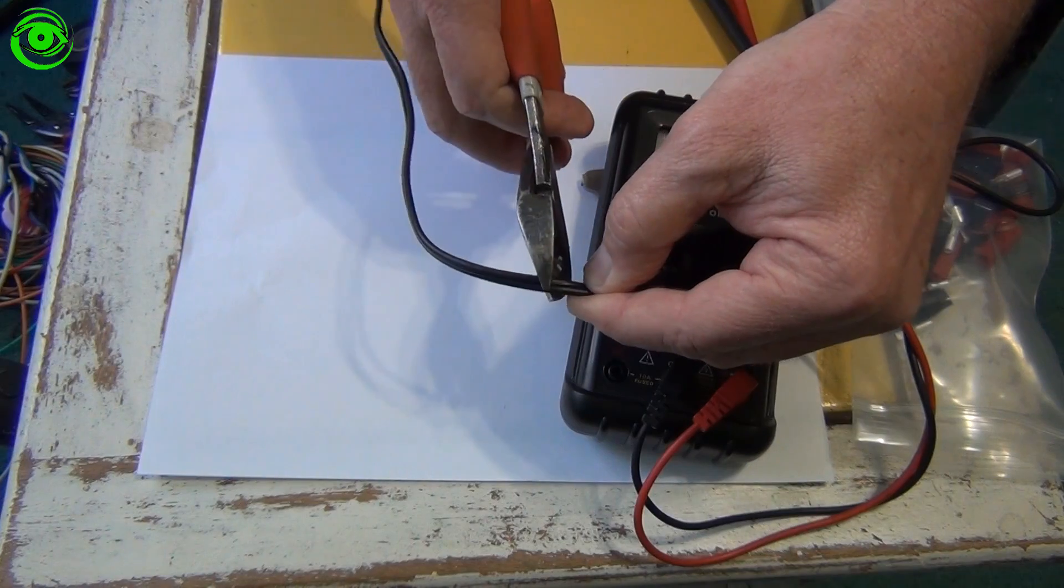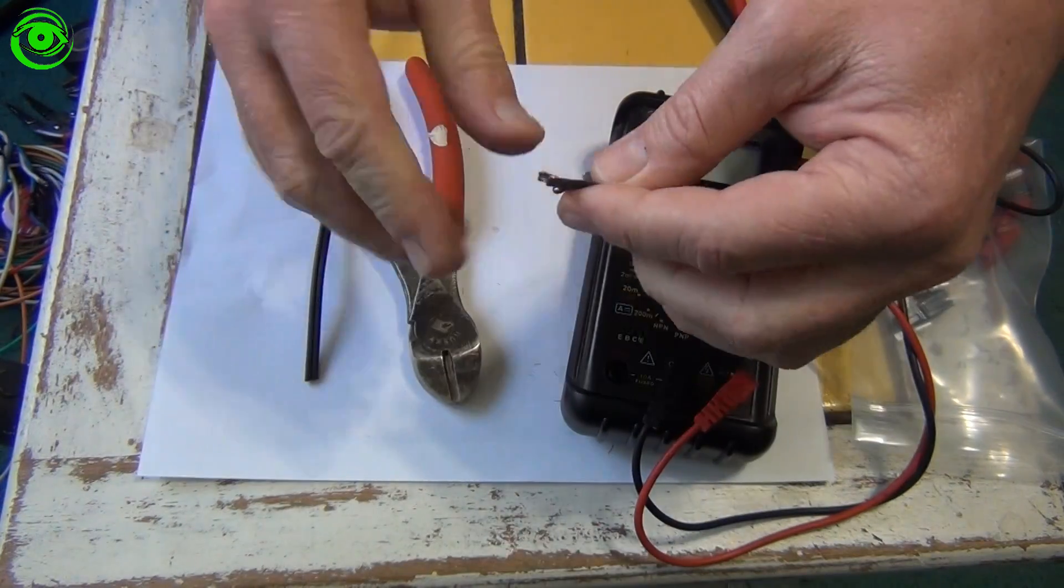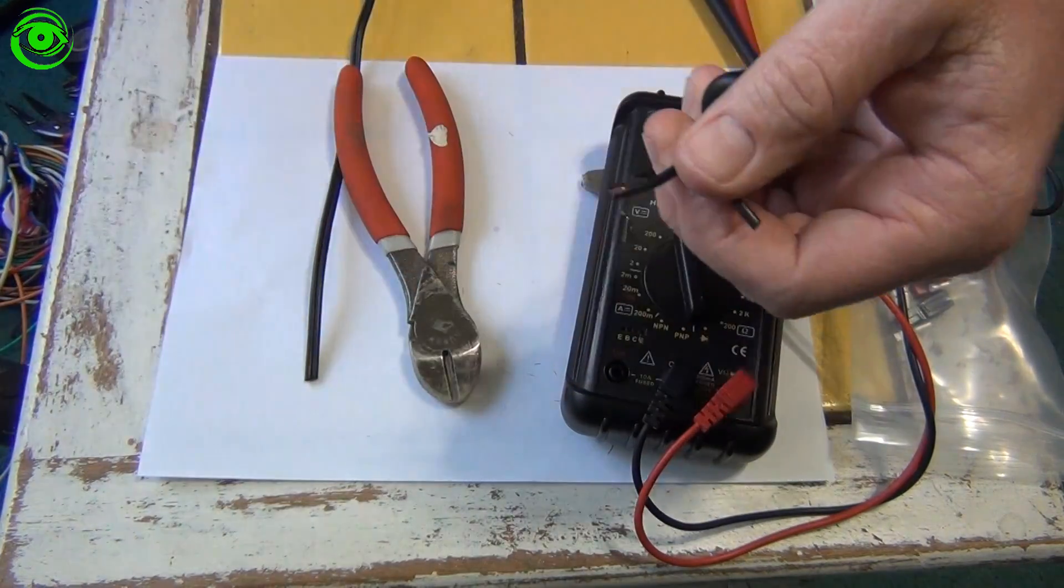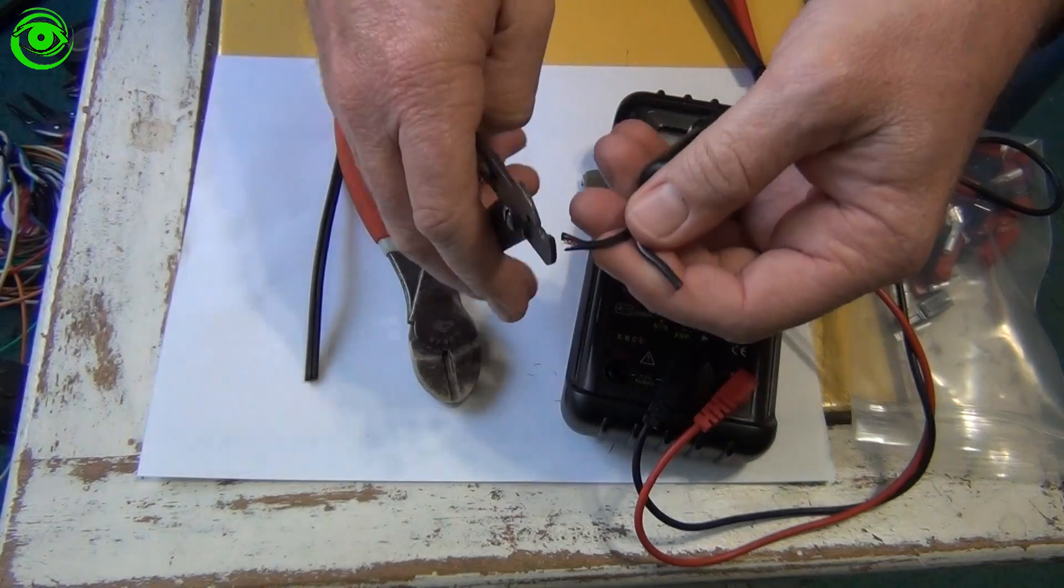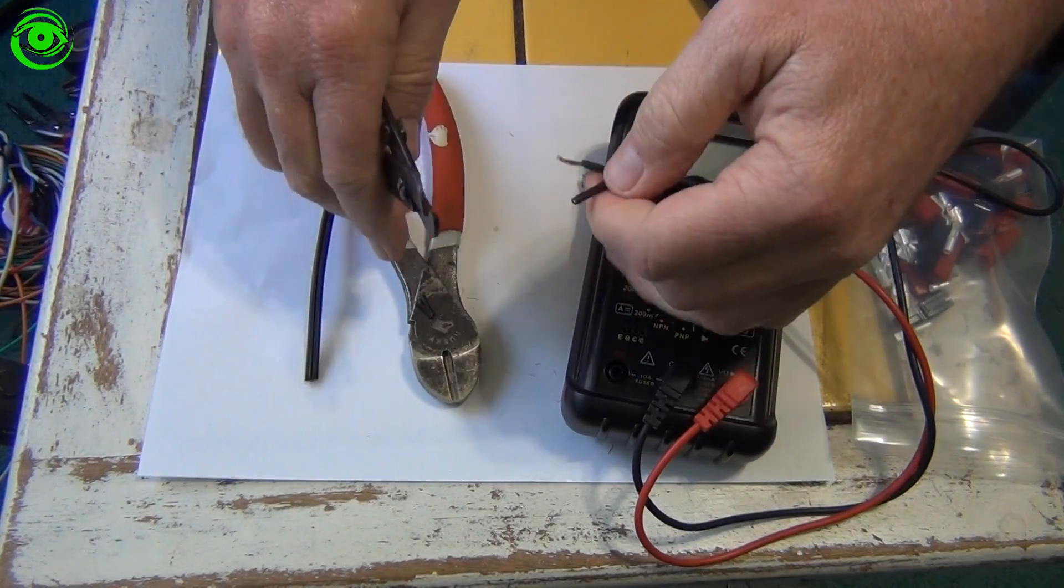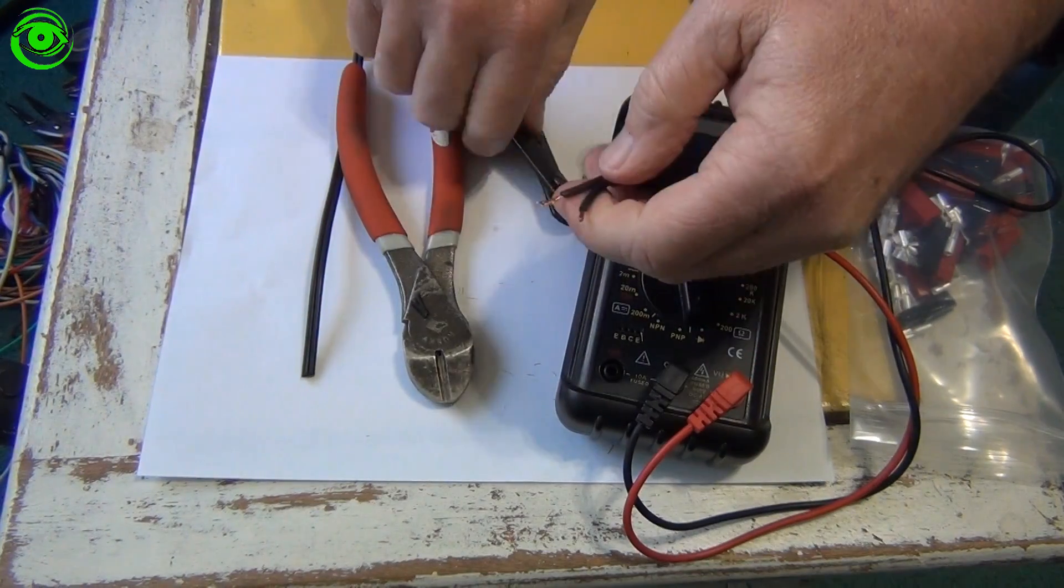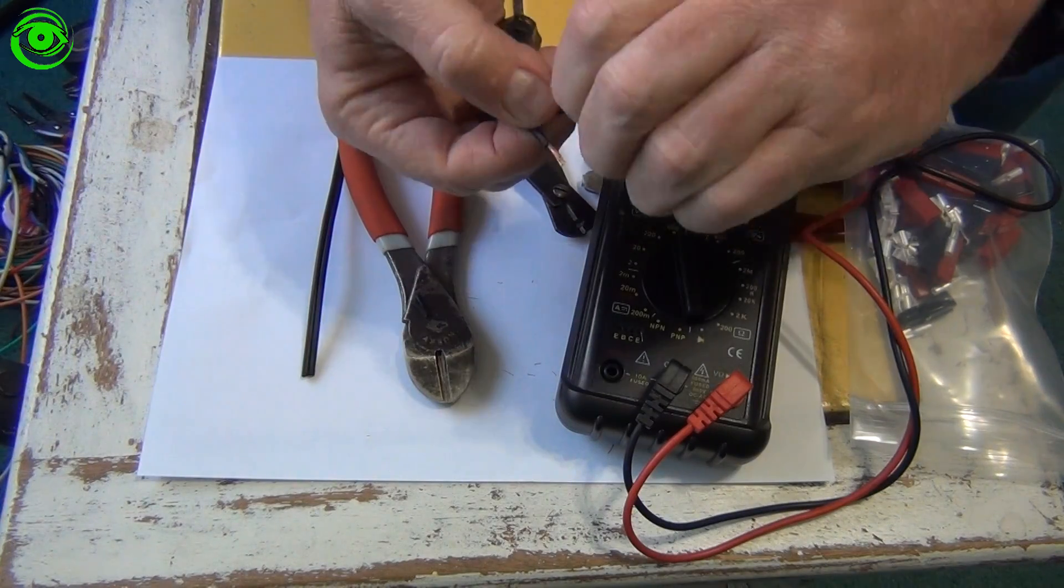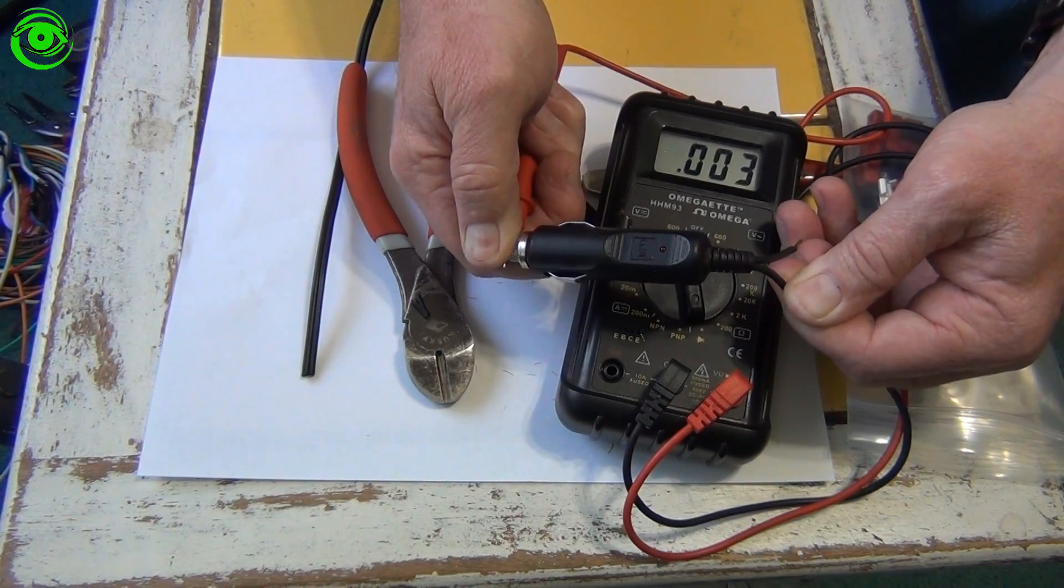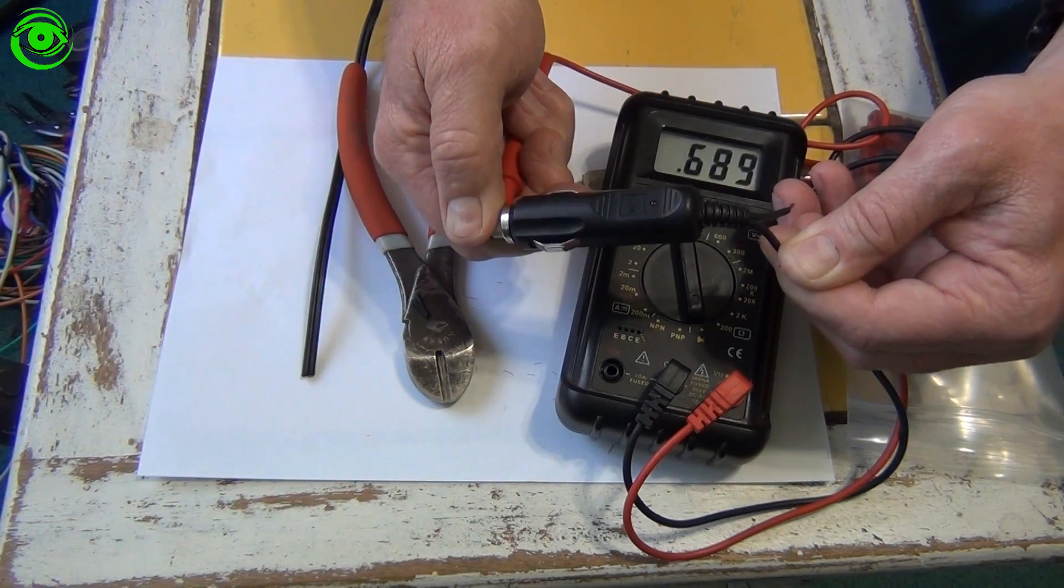You can see right there in the multimeter that we have continuity, so the ribbed one on mine was positive. Just make sure you check yours to be absolutely sure.